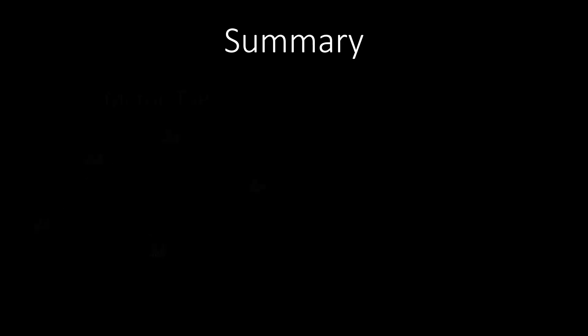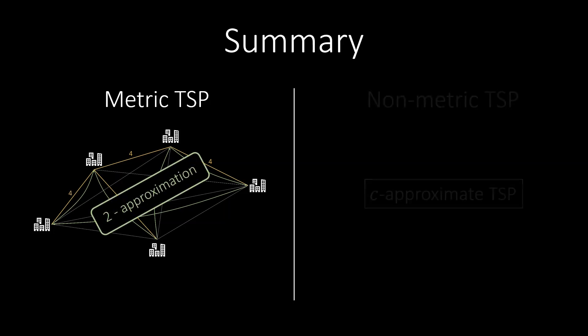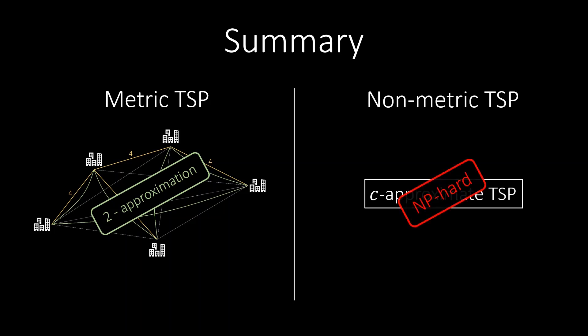Let's quickly summarize what we've learned in this video. First, we looked at metric TSP, a special case of the TSP problem. For this, we were able to find a 2 approximation. On the other hand, for the TSP problem in general, we proved that it is impossible to find an approximate solution in polynomial time. Thanks for watching this video.